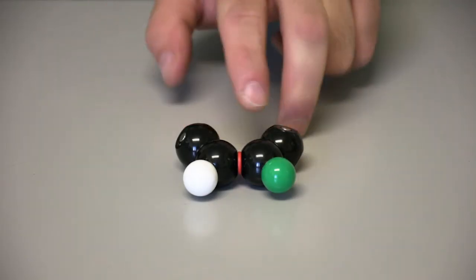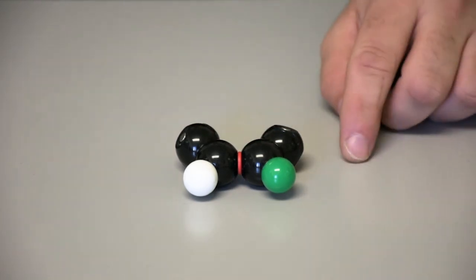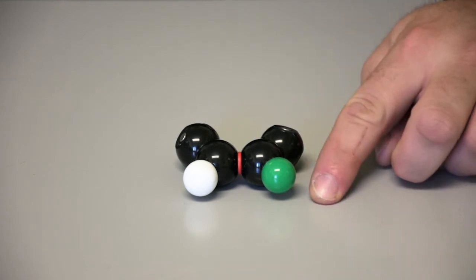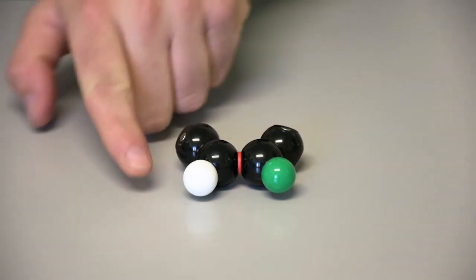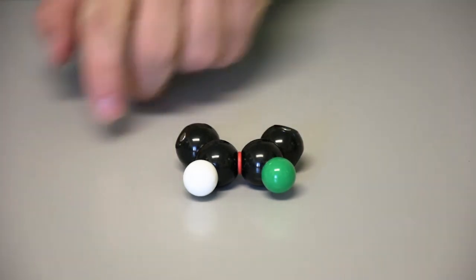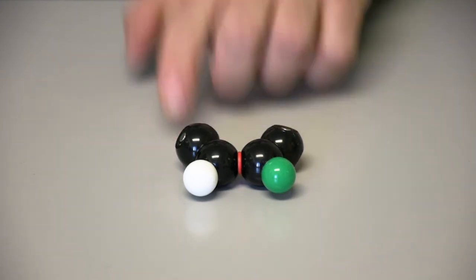The E-Z system does not match the cis and trans system in a case where you have two identical side groups, but one is a lower priority. Here, the chlorine has a higher priority than the methyl on this side, but on this side the methyl has a higher priority than the hydrogen. Therefore, the chlorine and methyl are the priority groups.